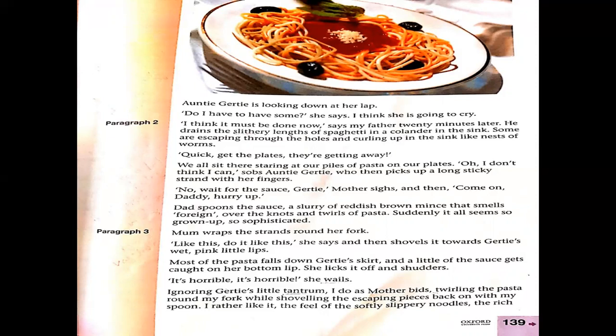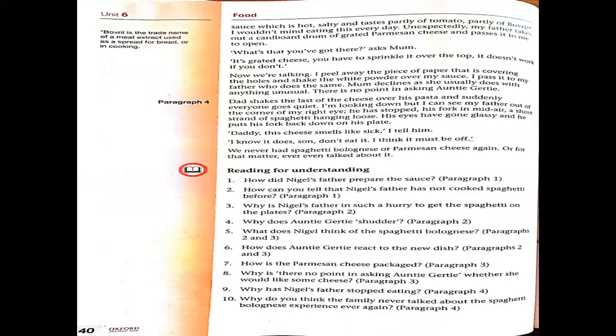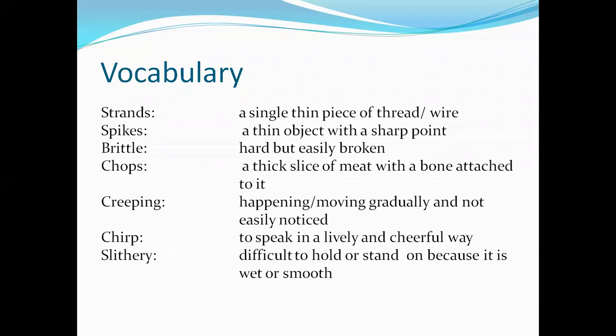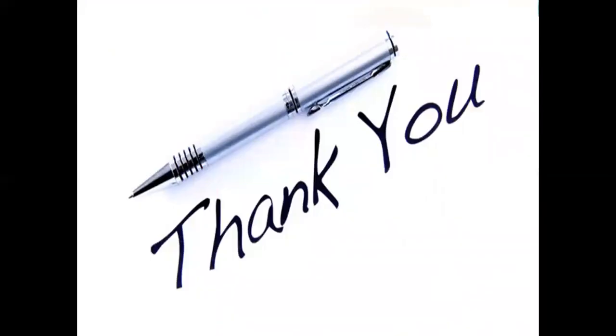Suddenly it all seems so grown up, so sophisticated — the situation now feels like they are behaving like adults. That was paragraph one and two. We will continue paragraphs three and four in the next class. Till then, revise and read again so your concept is clear, and attempt questions on page 140, questions one through four. Vocabulary is also being given for your convenience. See you in the next class — take care.